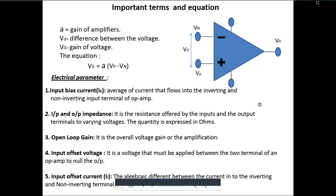Moving towards electrical parameters — op-amps have certain parameters. First is input bias current: it is the average current that flows into the inverting and non-inverting input terminals — the biasing current applied to make it work. Second is input and output impedance: impedance is the resistance offered by the op-amp, characterized in ohms.